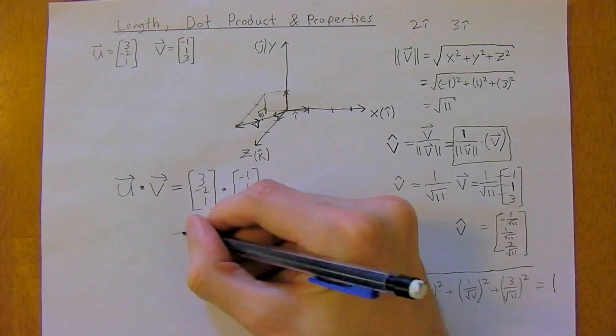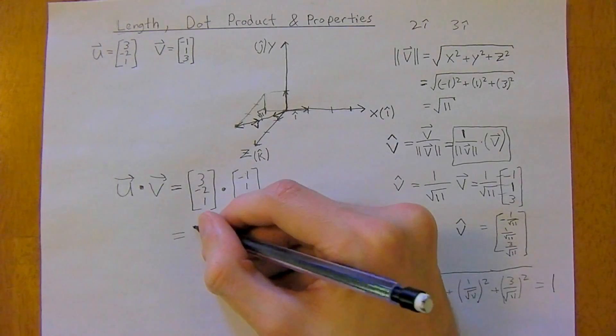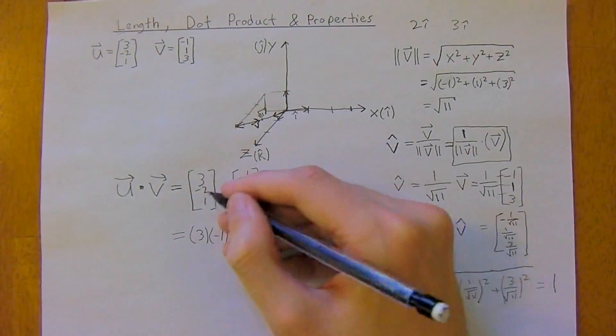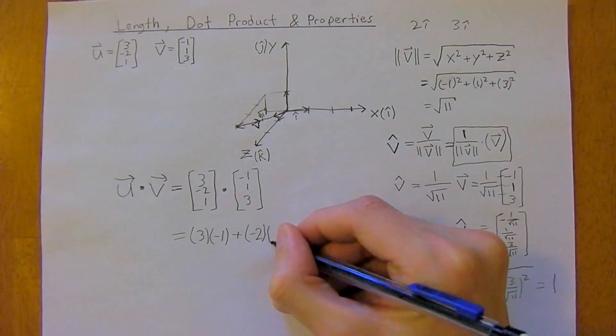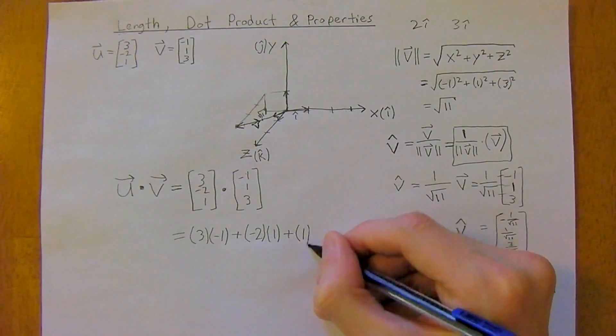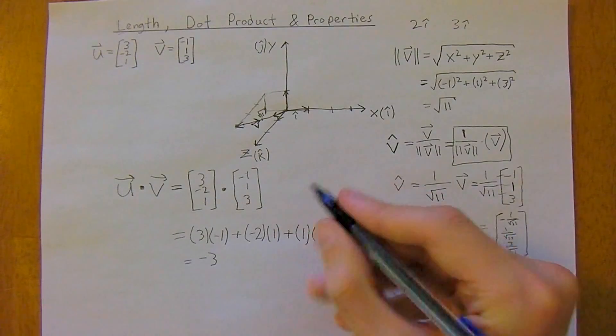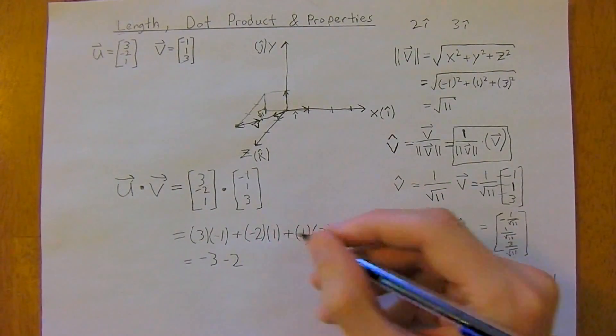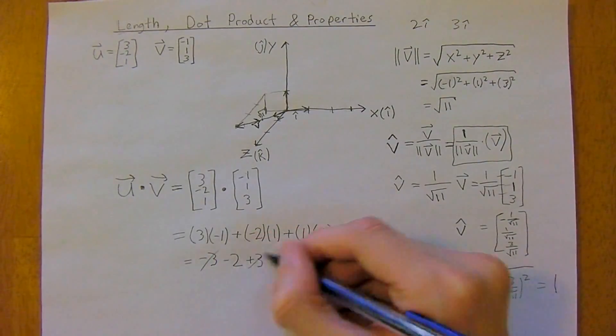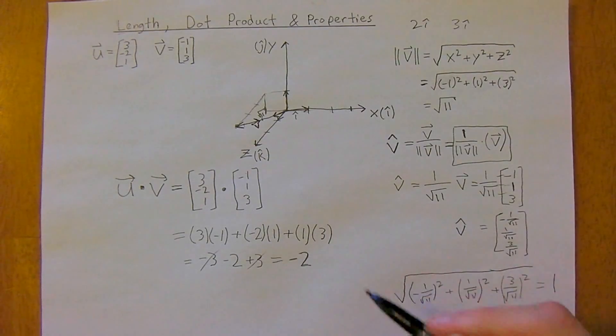And it's a pretty simple operation. So we just multiply the components and then add them. So 3 times negative 1 plus, well, now let's look at the y component. So negative 2 times 1 plus, and look at the z component, 1 times 3. So this is equal to negative 3, negative 2, plus 3. The 3s will cancel. So the dot product of u dot v is negative 2.